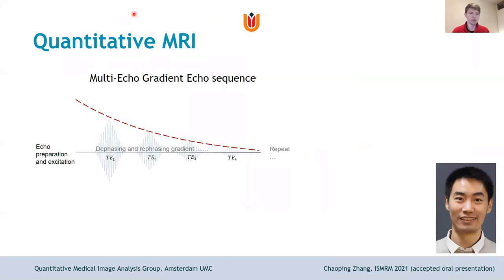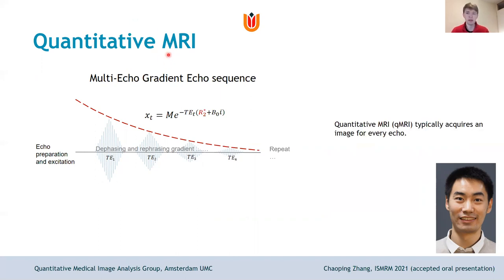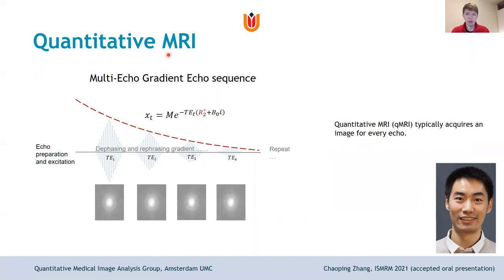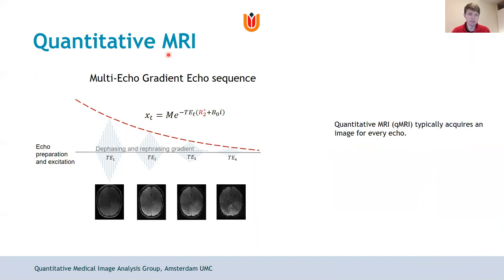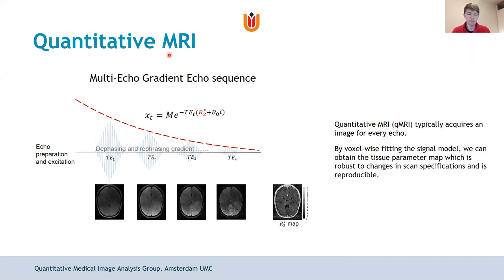The next step is to move to quantitative MRI, focusing on R2* mapping — this is work of Xiaoping Zhang in our group. We have a well-known model for R2* over multiple echoes, considering complex-valued signals where the ρ₀ term comes in. Commonly we acquire an image for every echo, do the inverse Fourier transform, and fit a signal model to arrive at our R2* map.